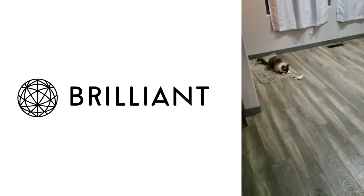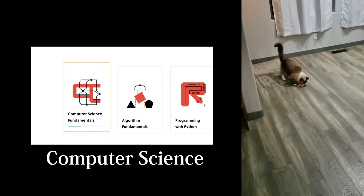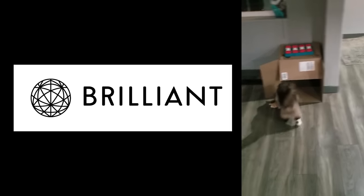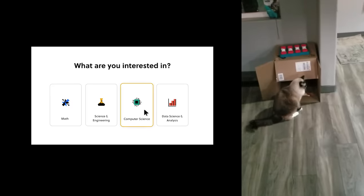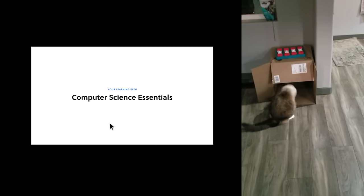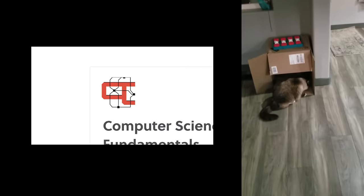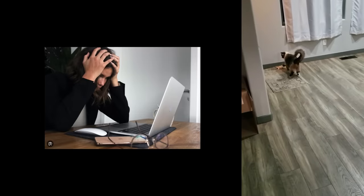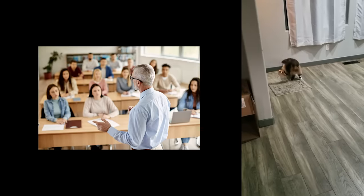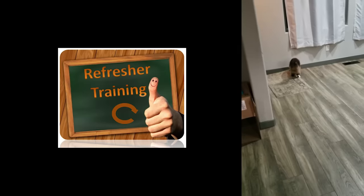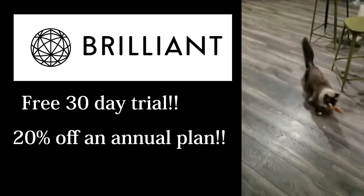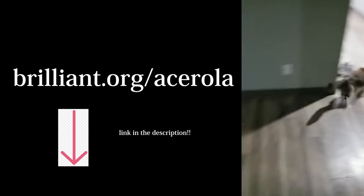This video has been sponsored by Brilliant. Brilliant is the best way to learn math, data science, and computer science interactively. Brilliant offers thousands of lessons from basic to advanced, so if you're just getting started learning math or are brushing up on your linear algebra for graphics programming, Brilliant has something for you. Even if you don't know where to start, Brilliant customizes its content to fit what you need — just take a quick quiz when you sign up and Brilliant will match you with lessons that fit your interests and level of expertise. Brilliant is a wonderful option for getting introduced to complicated topics you'd otherwise spend hours searching the web for, or hundreds of dollars on a related math class at college. I personally use Brilliant for a quick refresher on math concepts I haven't worked with in a long time. Try everything Brilliant has to offer with a free 30-day trial and 20% off an annual plan when you visit brilliant.org/acerola or click the link in the description.